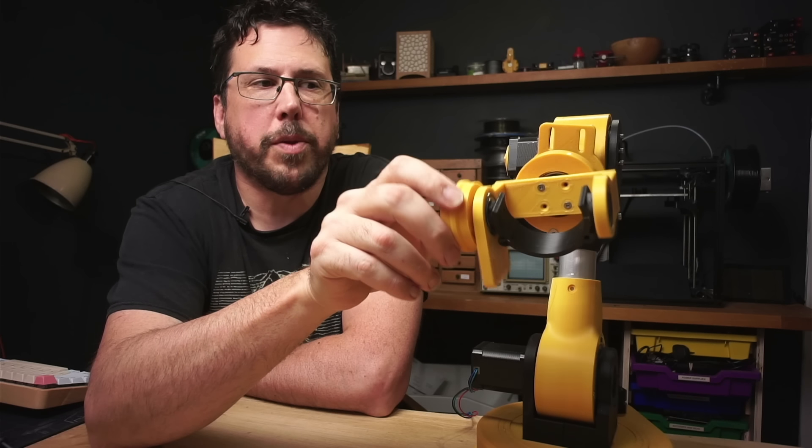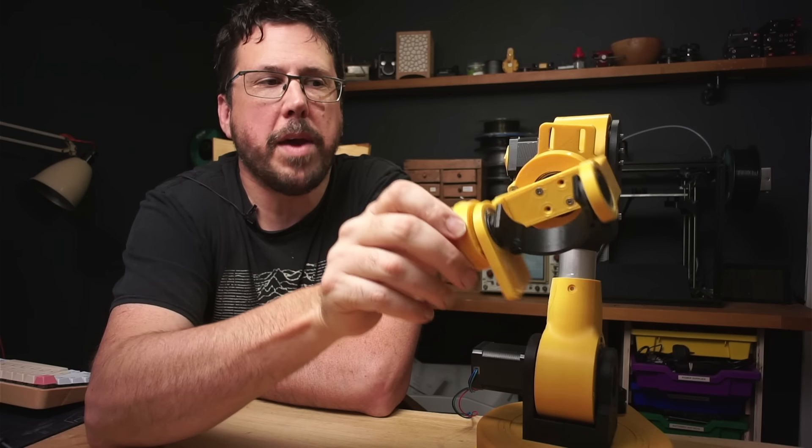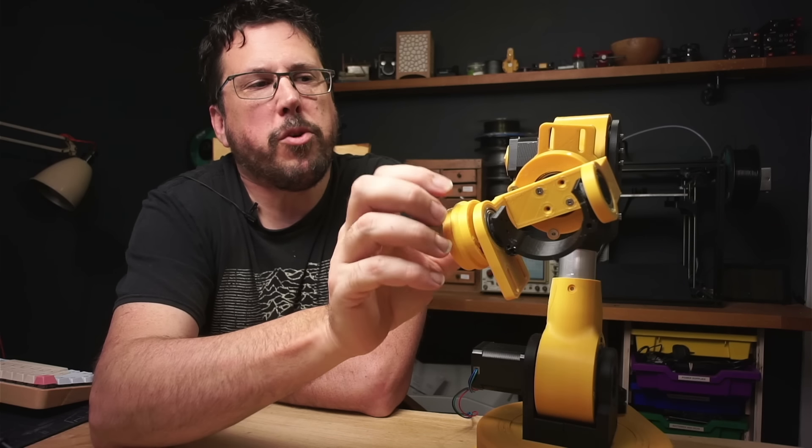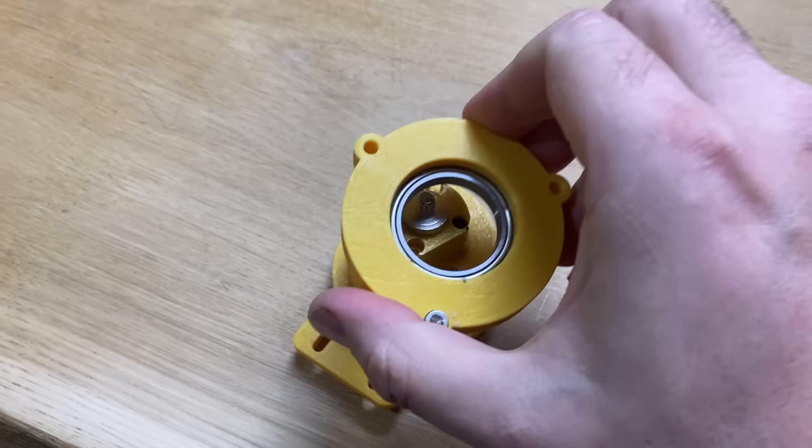I've screwed that onto the previous piece and now you can see we've got two degrees of freedom here. The final piece goes in here in between this one and is basically a duplicate of the first axis. I'll put that together now.